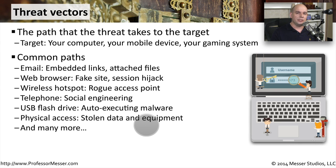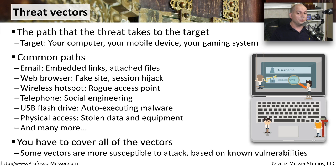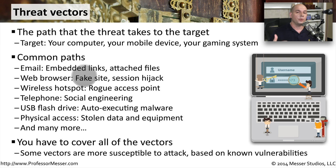Even something like physical access — if someone is able to gain access inside of your organization, they may be able to physically change data, steal data, or steal equipment from inside your building. There are many other ways that people can gain access, so you want to be sure you're covering the bases against all of these particular threat vectors. If someone gains access to email but you're already removing all embedded links and attached files before they even get to the end user, then that threat vector is not available to the bad guys.